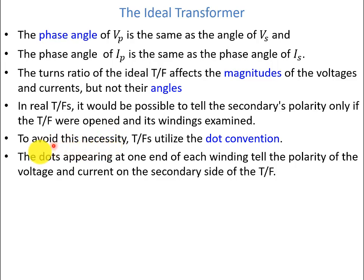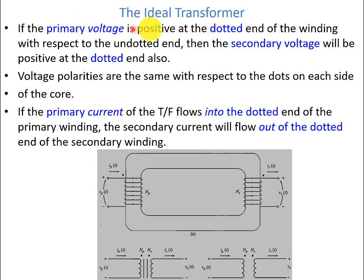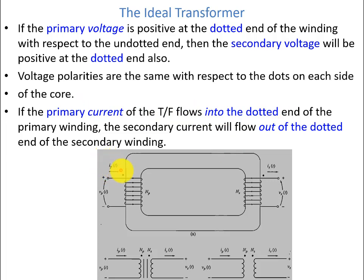We use the dot convention when making circuit diagrams or power system drawings. The dots appearing at one end of each winding indicate the polarity of the voltage and current on the secondary side. If the primary voltage is positive at the dotted end, then the secondary voltage will also be positive at the dotted end. If the primary current flows into the dotted end of the primary winding, the secondary current will flow out of the dotted end of the secondary winding — meaning current enters the dotted end on the primary side and leaves to the load on the secondary side.